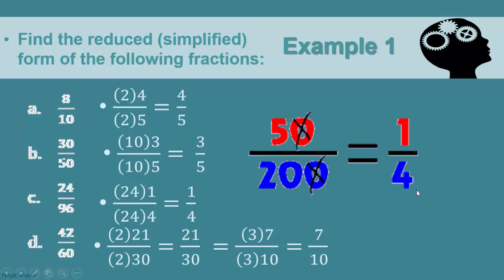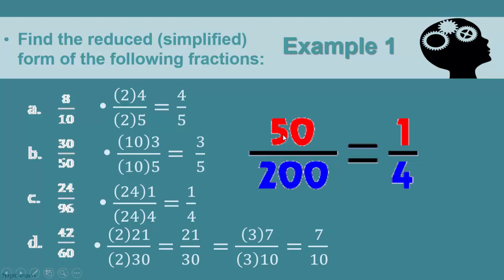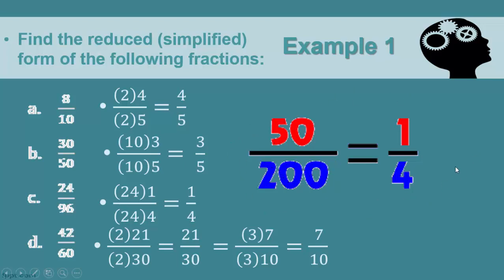In the animation, we have fifty over two hundred. It shows that you can cancel the zero from fifty and the zero from two hundred, leaving five over twenty. You then factor out five from both, giving five times one over five times four. The fives cancel out, and you end up with one quarter.